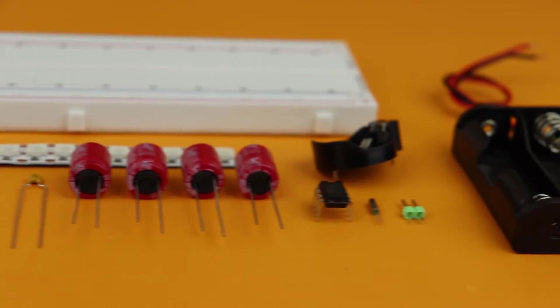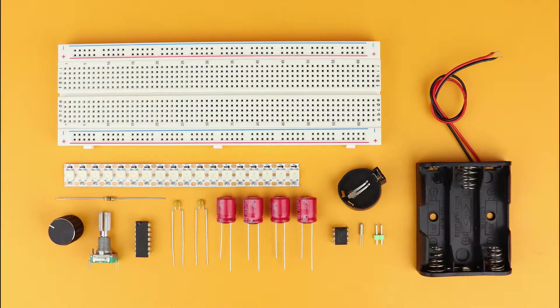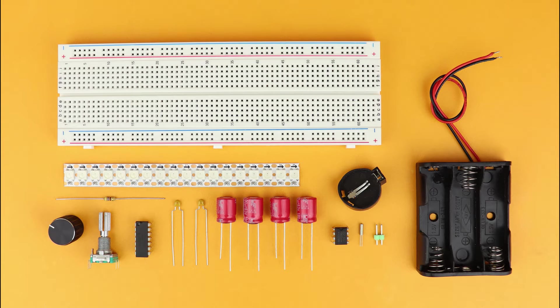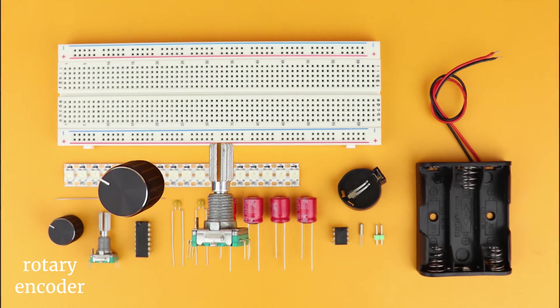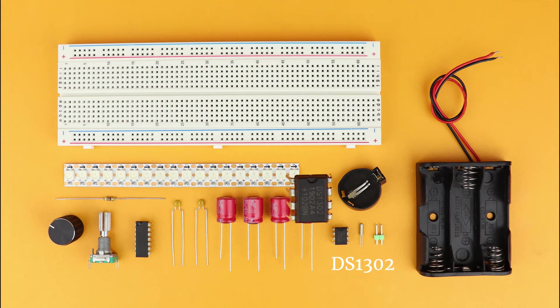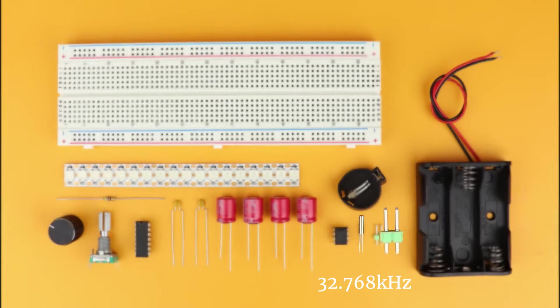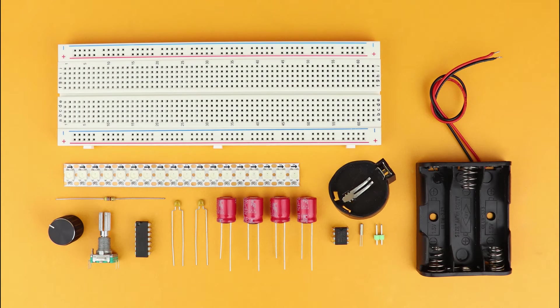As always I like to start with a list of components that we need. First is a breadboard as well as a 4.5 volt battery pack like this one here. We need a rotary encoder to set the time and the DS1302 real-time clock IC to remember the time together with a 32.768 kilohertz watch crystal as well as a coin cell battery pack for backup power.